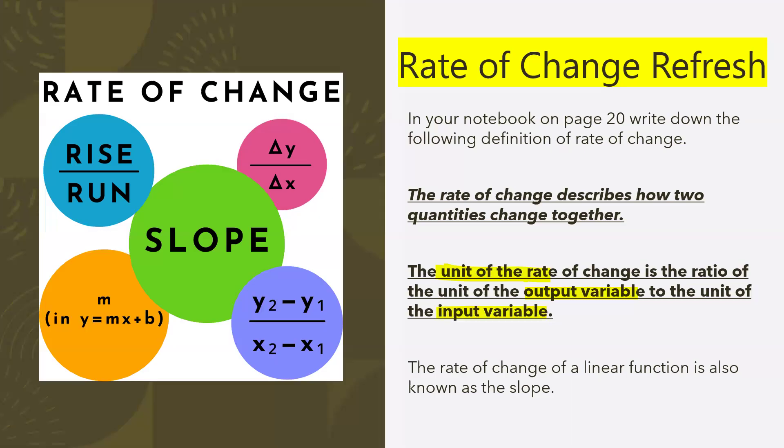Essentially, all we're doing is comparing two quantities, the independent versus the dependent, and those quantities will change. Again, remember, if you can't see or you feel like you need to go back and refer to this, this is always on your handy-dandy canvas.